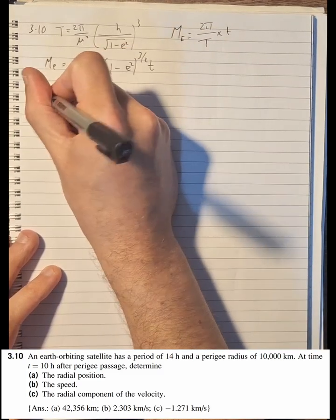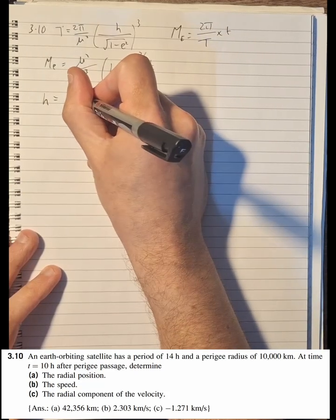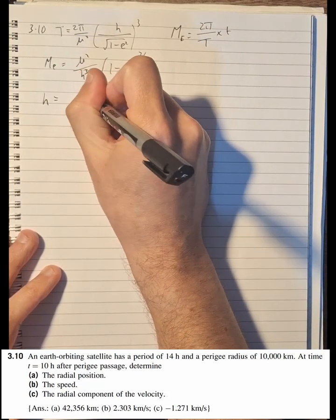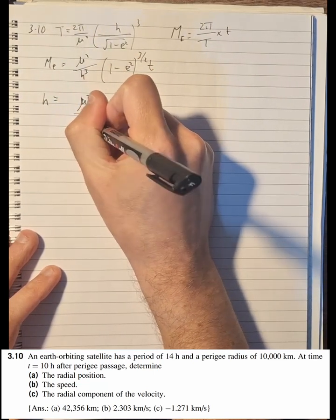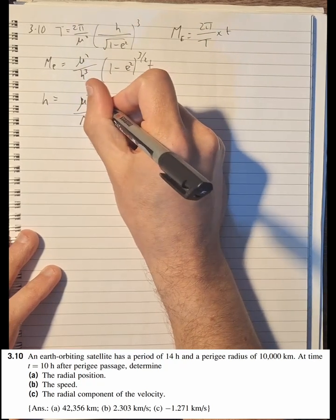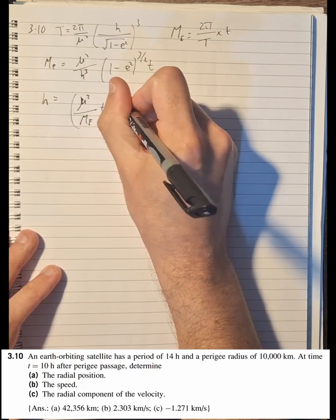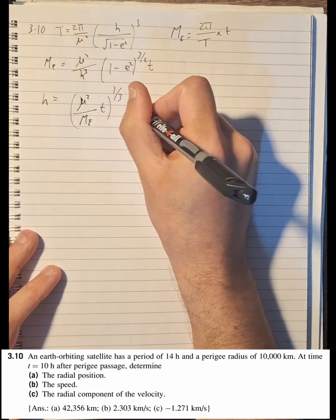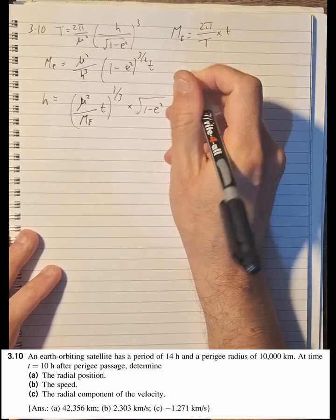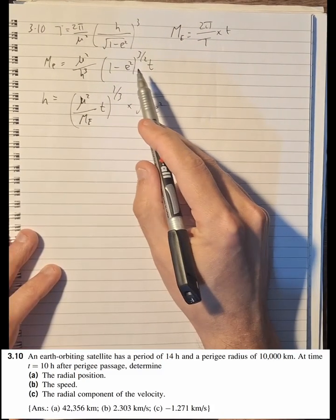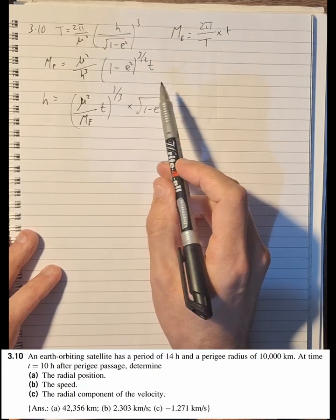So h equals the angular momentum. h = (μ²/M_e×t)^(1/3) × √(1-e²). So that is that rearranged, and we have taken the cube root to remove the cubed component.